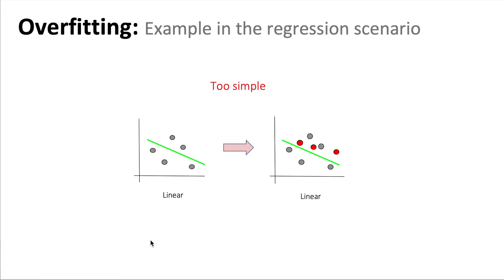So the linear model seems too simple, right? Actually, when we get new cases like the red dots, it is very likely that the linear model will miss those red dots and it will have big errors.